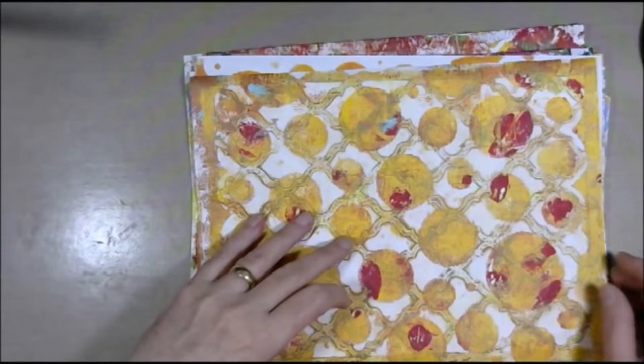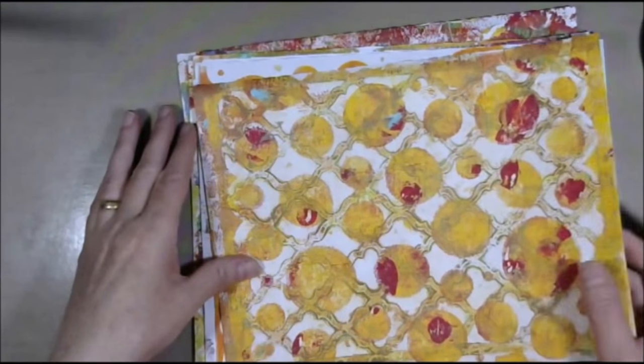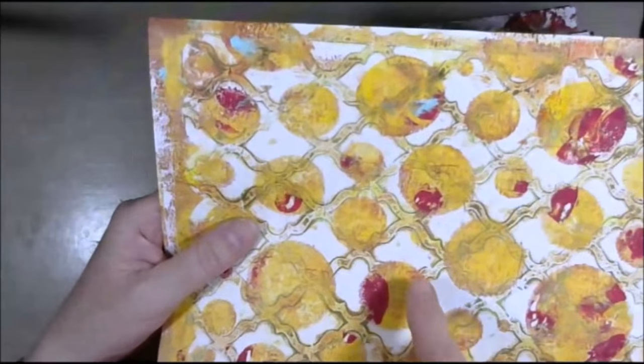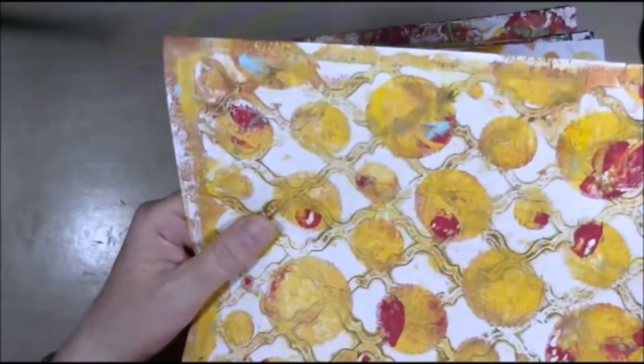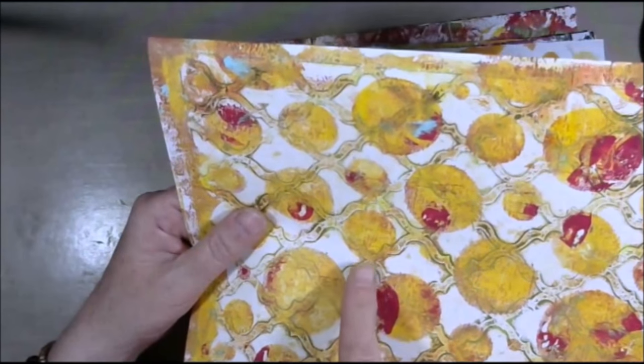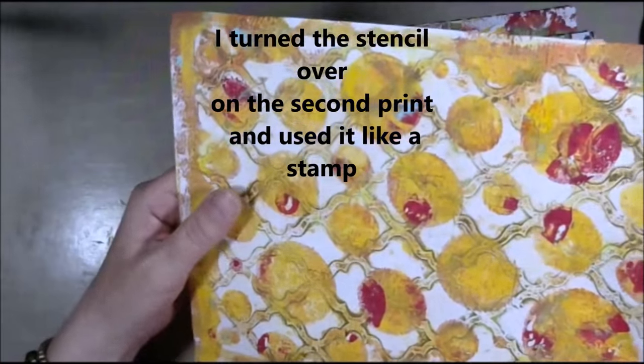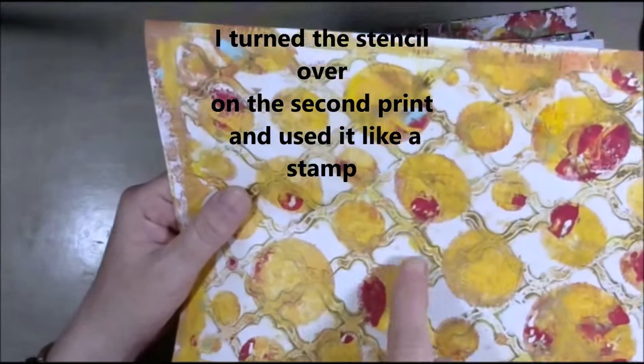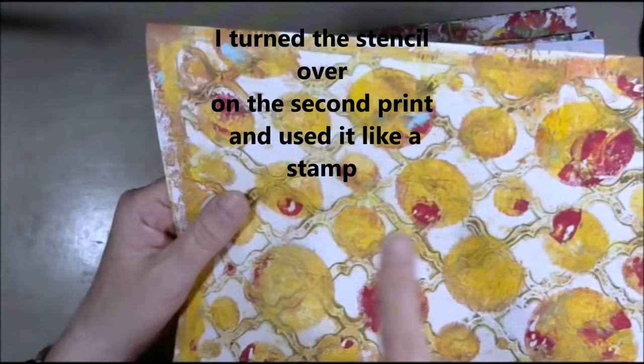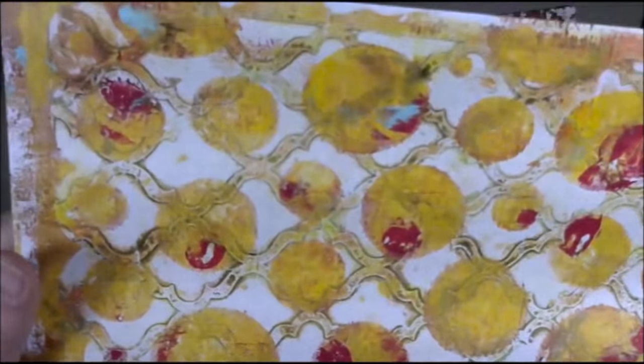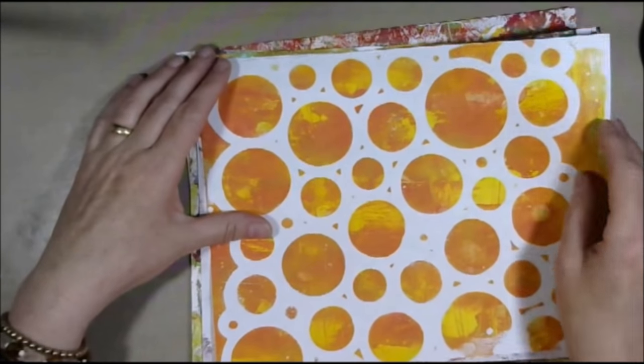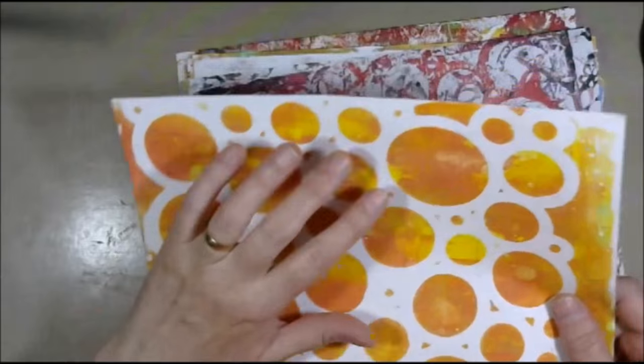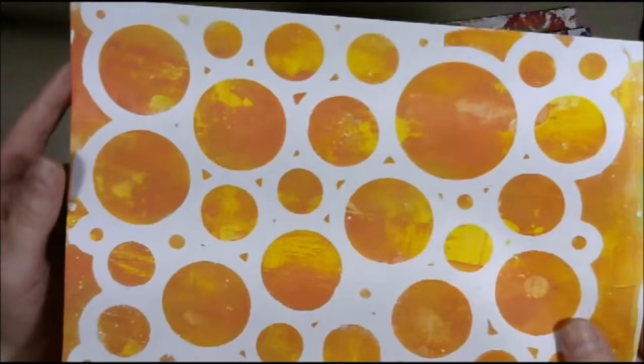I love this one because the tapestry stencil, this was the second print, and it worked more like a stamp than a stencil, so it has nice outlines around there. Yeah, I really like this one. And that was the very first one, nice color. So I will use those circles for something.